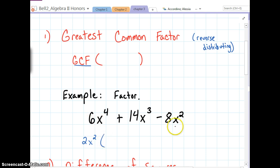What's left is you're dividing each one of these by 2x squared. So it becomes 3x squared. It becomes 7x, and it becomes minus 4.